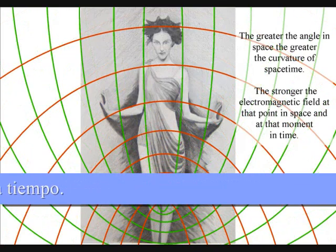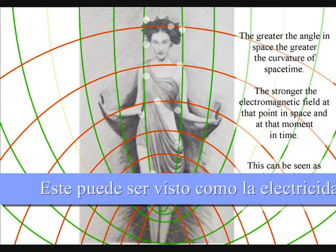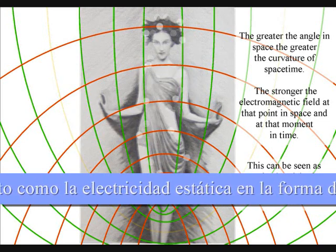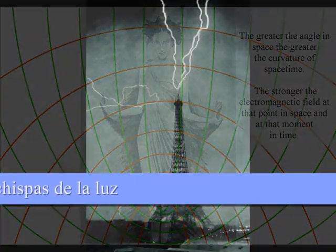This can be seen as sparks of light associated with static electricity. The atoms will even distort the geometry of spacetime, creating electrostatic discharge in the form of lightning.